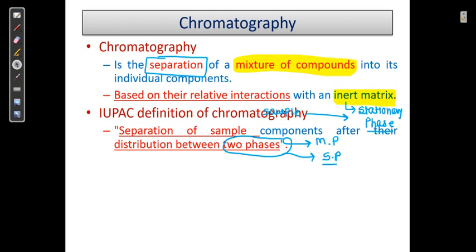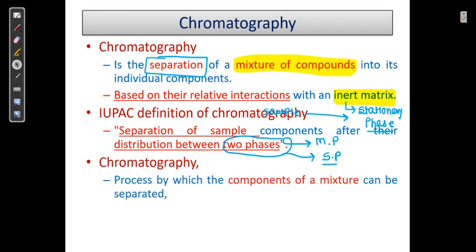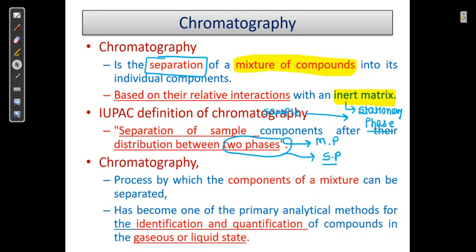When the sample is distributed between the mobile phase and the stationary phase — the two phases — we get the separated components. Chromatography is a process by which components of a mixture can be separated, and it is used for identification and quantification of compounds in the gaseous or liquid state.